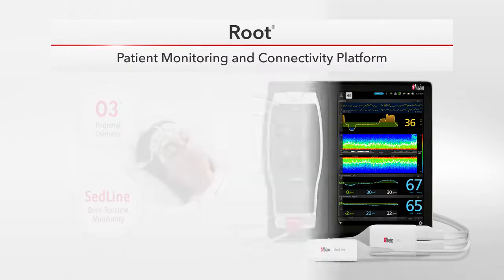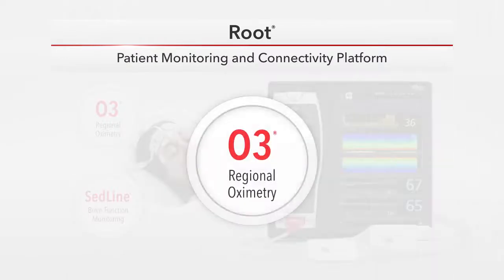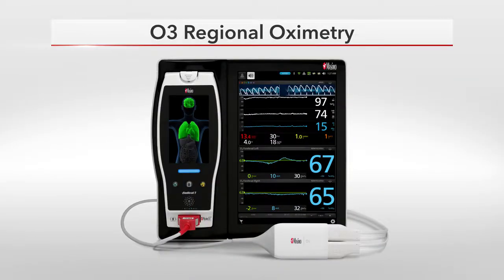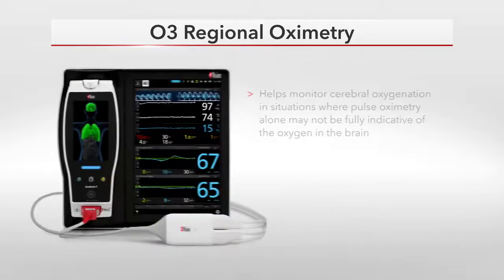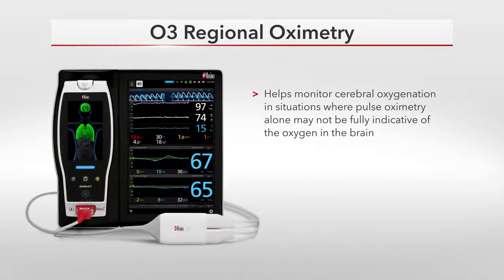The O3 system is comprised of three components: Root, the O3 Masimo Open Connect Mach 9 Module, and O3 Sensors. O3 Regional Oximetry helps monitor cerebral oxygenation in situations where pulse oximetry alone may not be fully indicative of the oxygen in the brain.